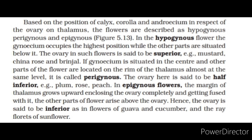Based on the position of calyx, corolla and androecium in respect of the ovary on the thalamus, flowers are described as hypogynous, perigynous and epigynous. In the hypogynous flower, the gynoecium occupies the highest position while the other parts are situated below it. The ovary in such flowers is said to be superior — example: mustard, China rose and brinjal. If the gynoecium is situated in the center and other parts of the flower are located on the rim of the thalamus at almost the same level, it is called perigynous. The ovary here is said to be half inferior — example: plum, rose, peach. In epigynous flowers, the margin of the thalamus grows upward enclosing the ovary completely and getting fused with it; the other parts of the flower arise above the ovary. Hence, the ovary is said to be inferior, as in flowers of guava, cucumber and the ray florets of sunflower.